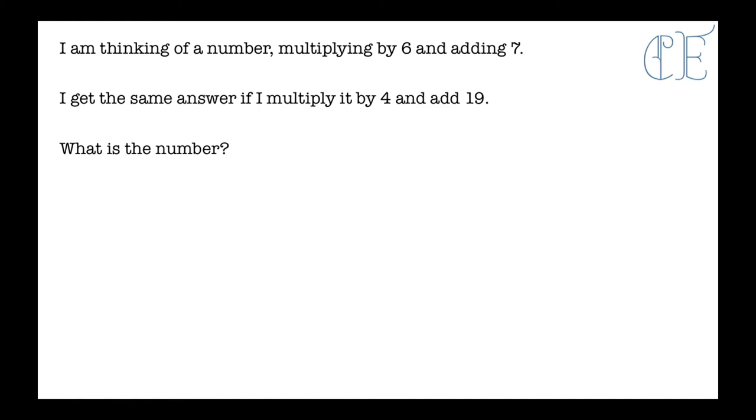Okay, what about this one then? I'm thinking of a number, multiplying it by 6 and adding 7. I get the same answer if I multiply it by 4 and add 19. What is the number? So I'm thinking of a number first of all. Here's my number X, I don't know it. I multiply it by 6 so I get 6X and I add 7. And then I get exactly the same number, so equals. If I multiply it by 4, we've got our number, we're multiplying it by 4, and we add 19.